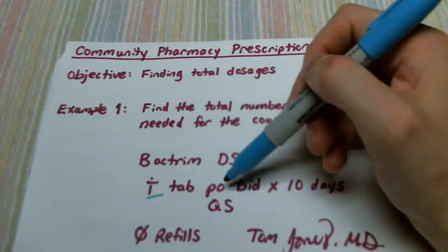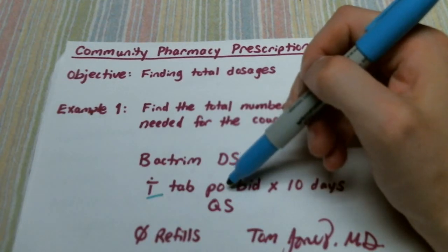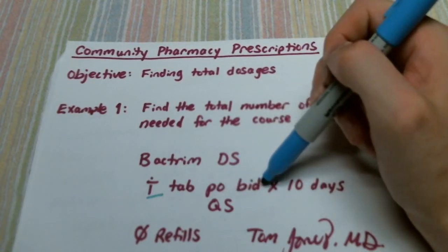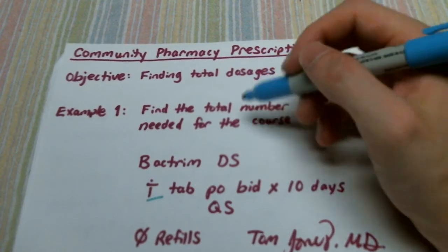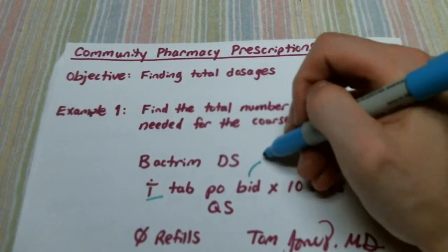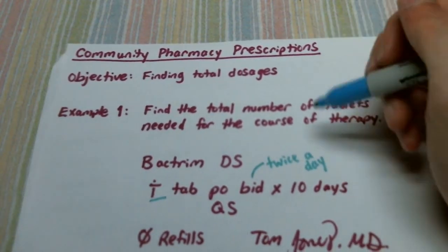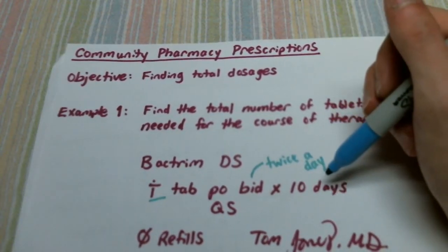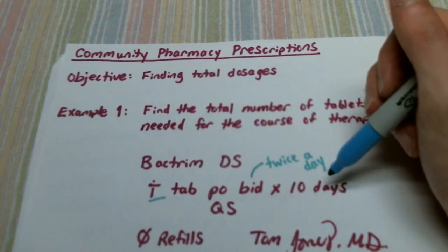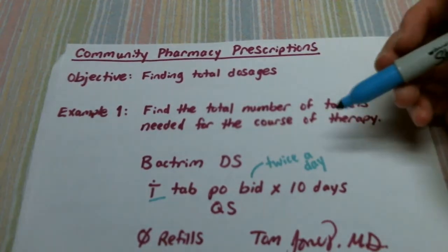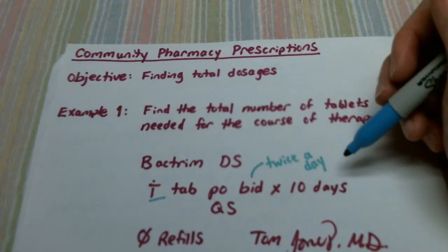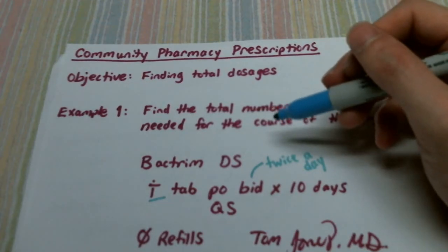In this case it means one tablet. PO means by mouth, BID means twice a day for ten days, and quantity sufficient means to dispense a quantity sufficient for the course of therapy. This is a very simple example, but it's an example actually that I saw a couple times last week.